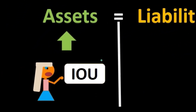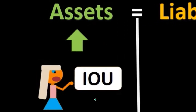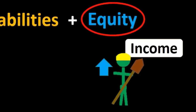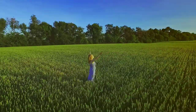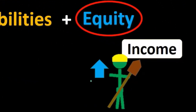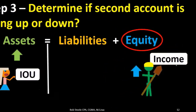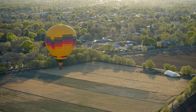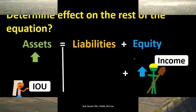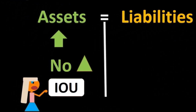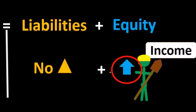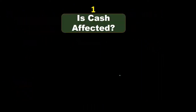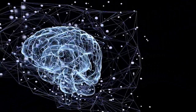Then for step two, what other account is affected? In this case, equity is affected because income is being earned. It's a little more difficult to know whether income is increasing or decreasing than it is to know whether an asset is going up. However, if we know the asset went up, it's easier to say equity must also be going up — it's on that side of the equal sign and assets went up. We double-check: does it make sense that equity is going up? Yes, because we earned revenue, income is going up, increasing net income and therefore total equity as well.